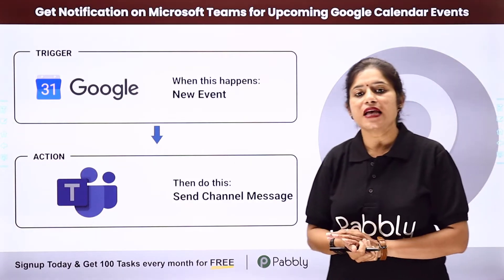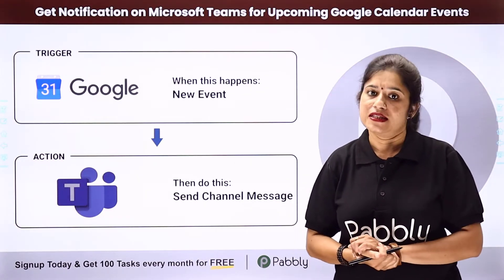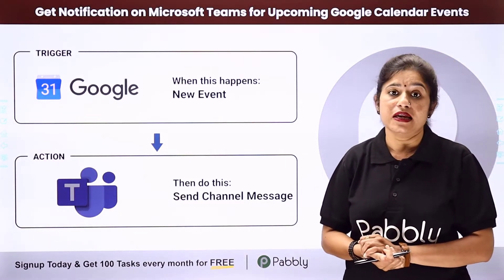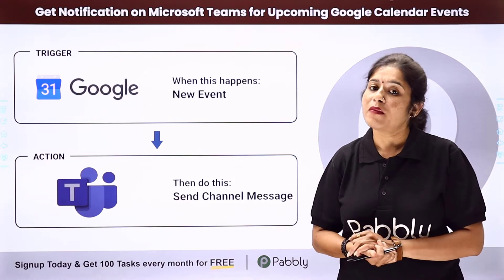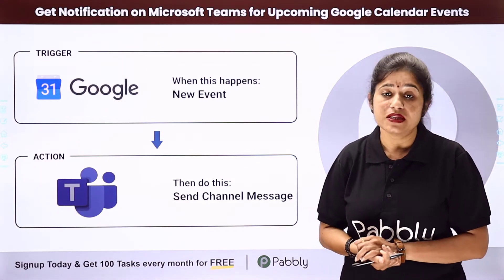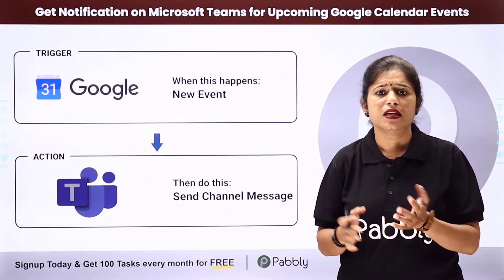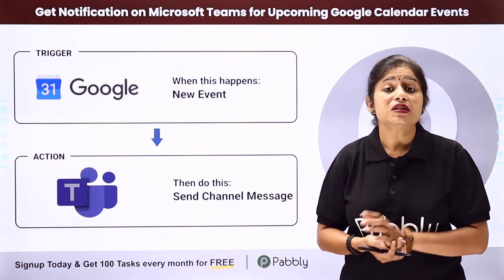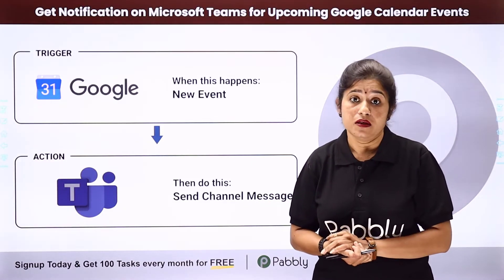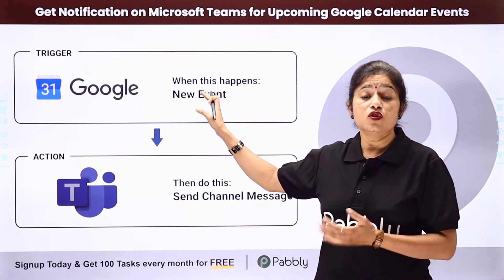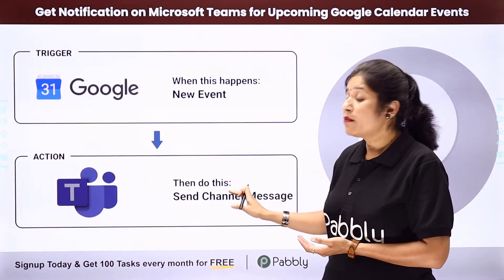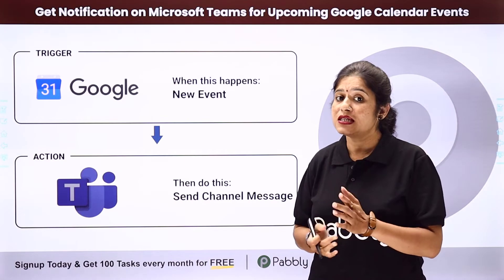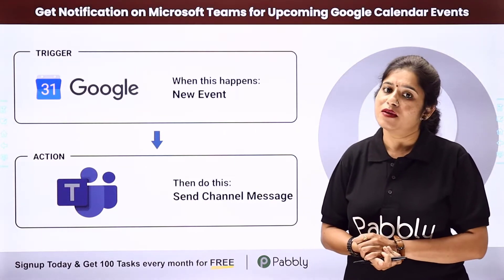Let's take an example that you are a manager of any organization. Whenever you are creating new events in your Google Calendar, you need to inform your team on Microsoft Teams that a new event has been created and they need to attend that particular meeting. But here you are doing it manually — whenever a new event is created, you need to go to Microsoft Teams and inform them manually.